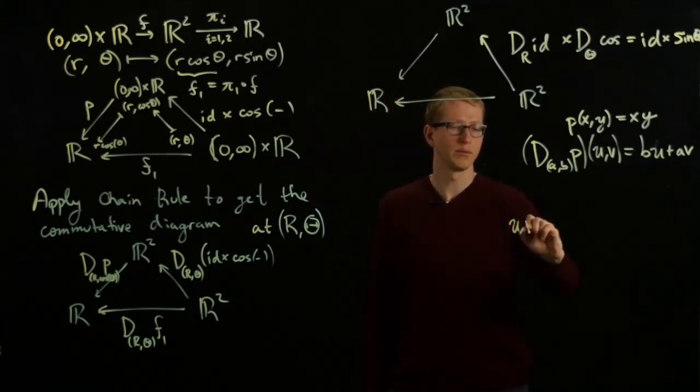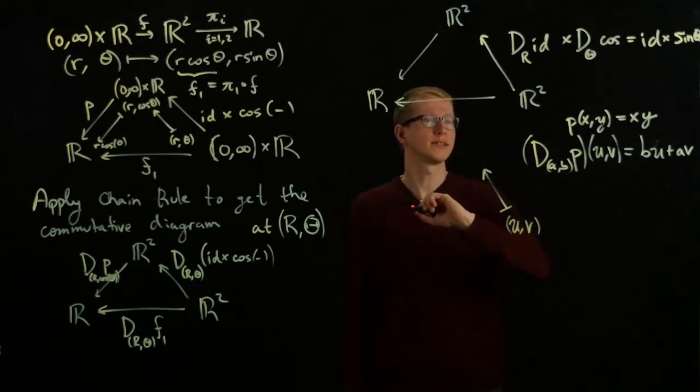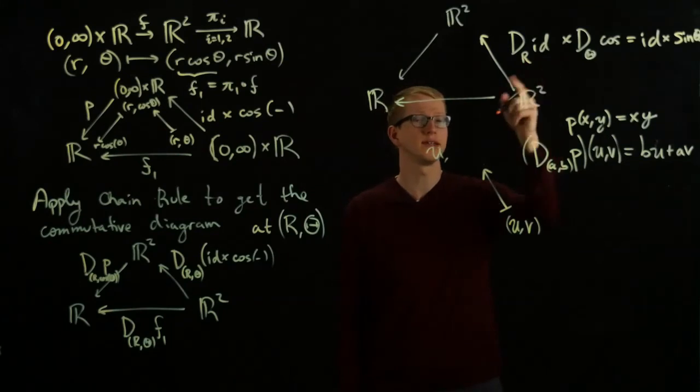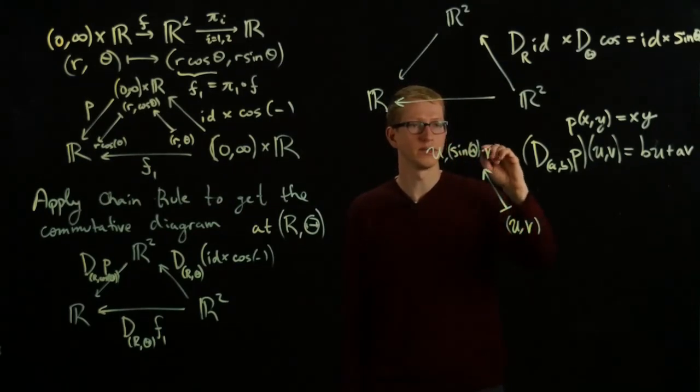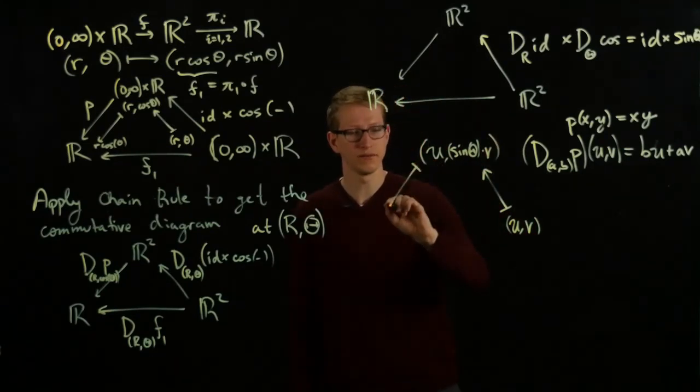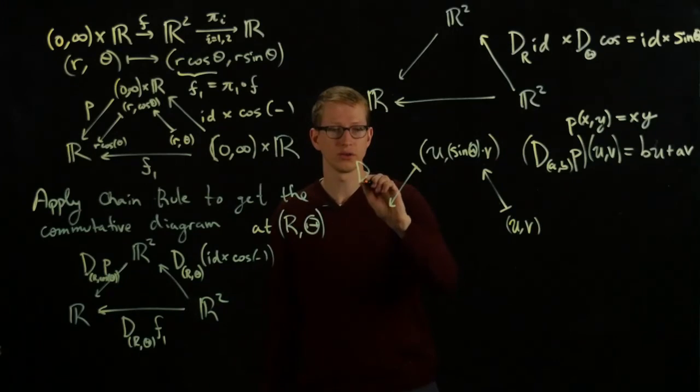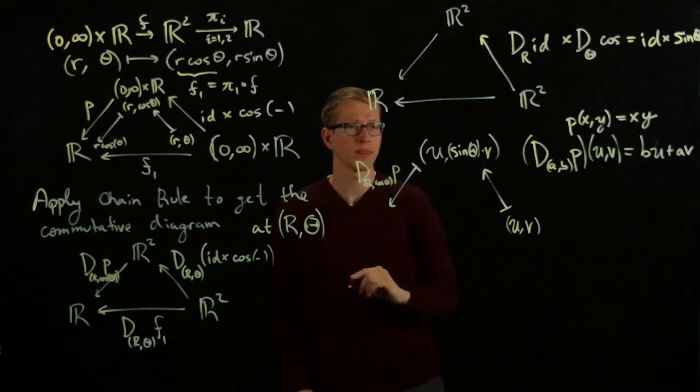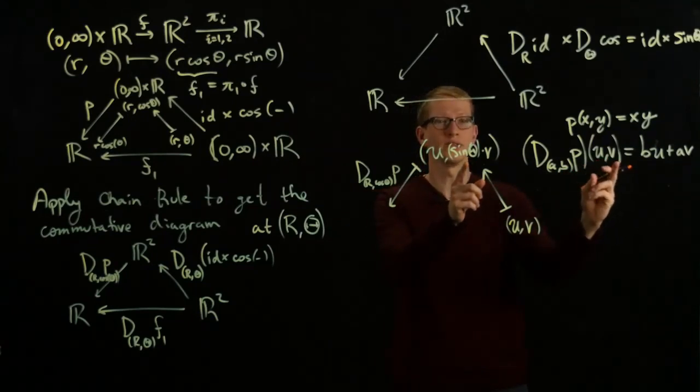Let's start with (U, V) in R². This gets sent to the vector (U, sin θ times V), because this is the identity in the first component. Then for this function, we have D at the point (R, cos θ) of the function P, and we're inputting this now. So our U is the same, but our V is actually now sin θ · V, and we use this formula.